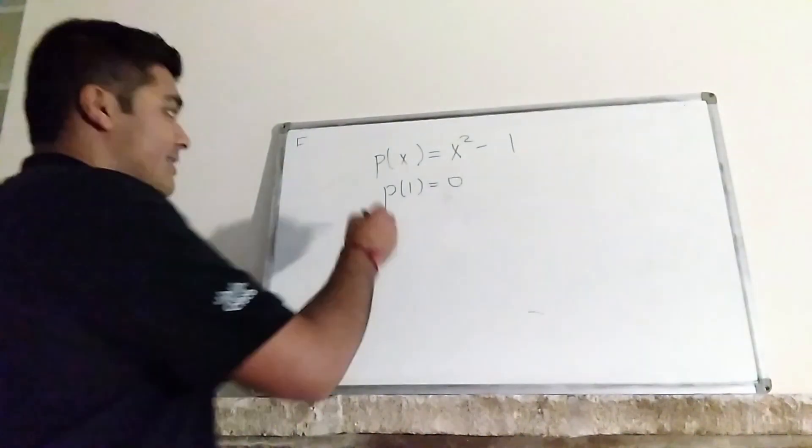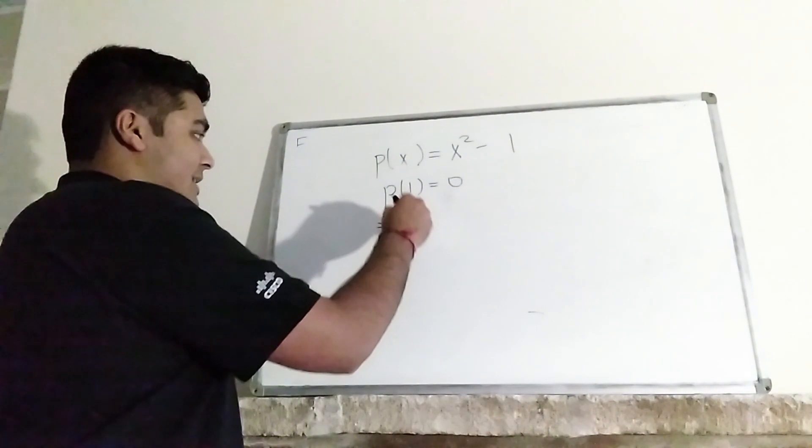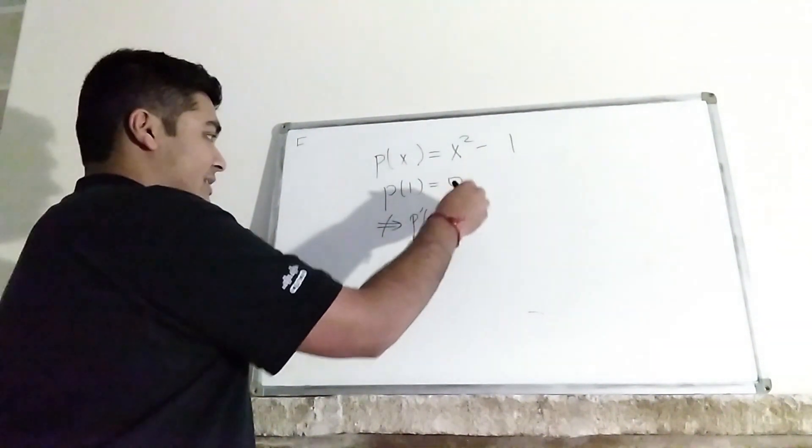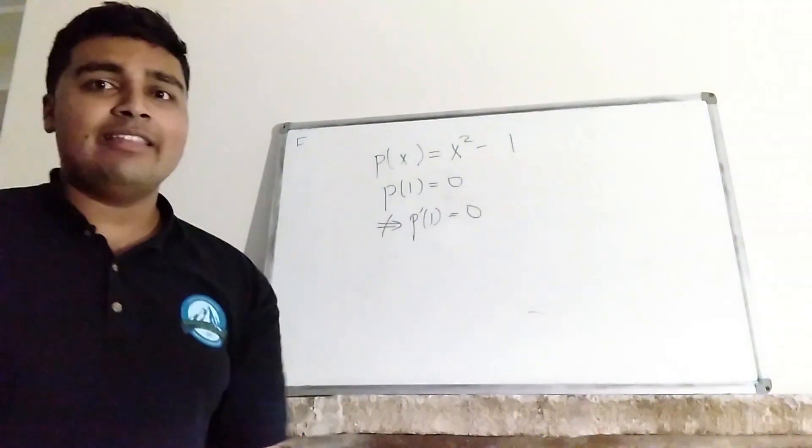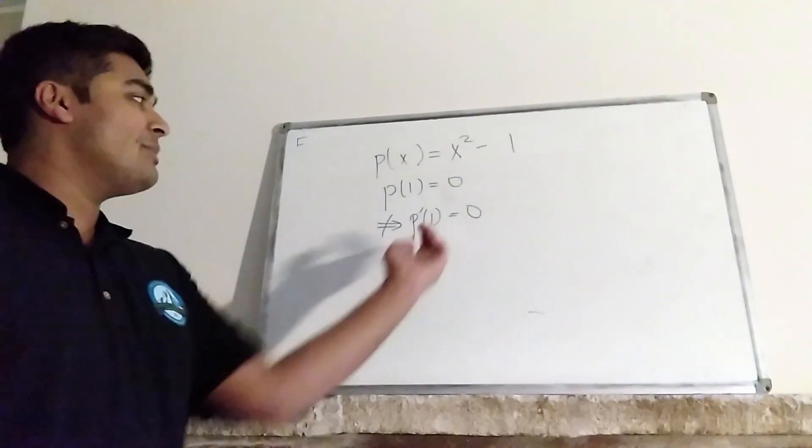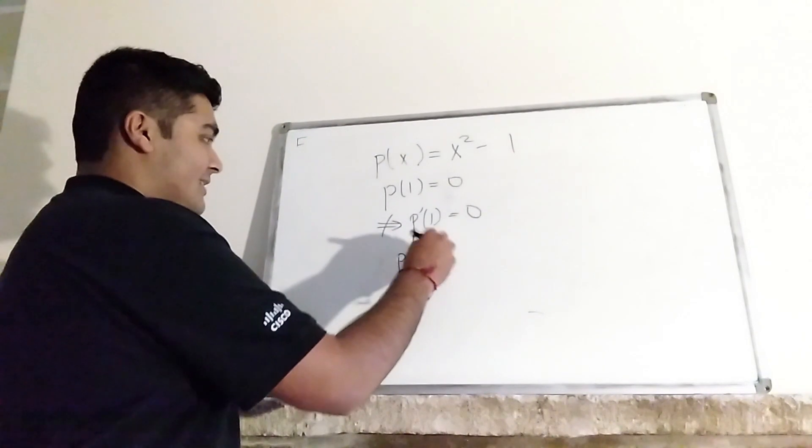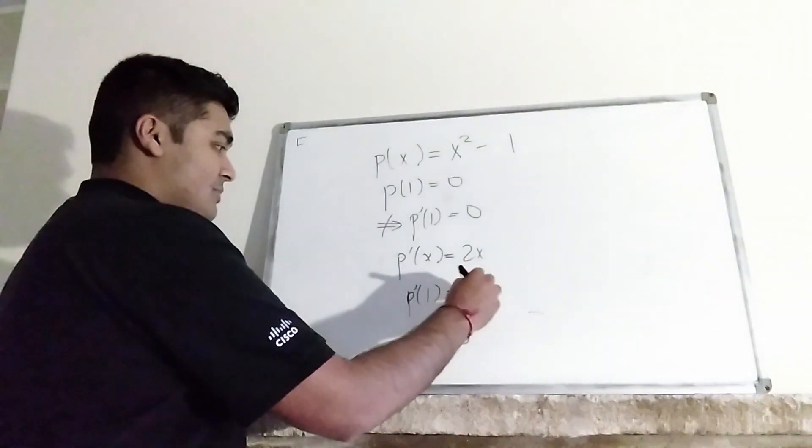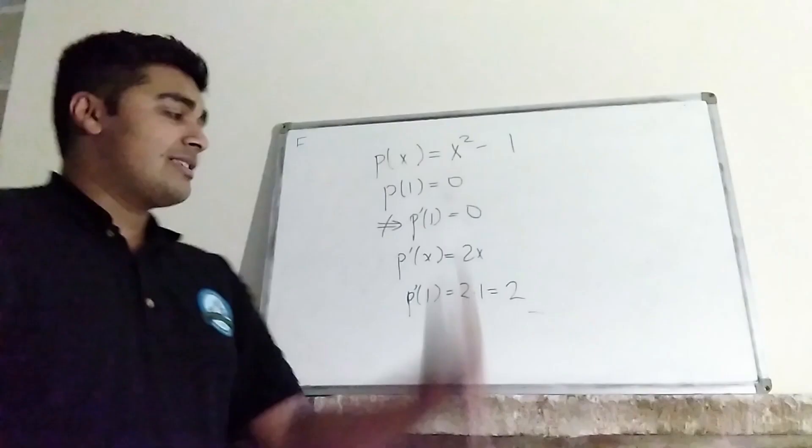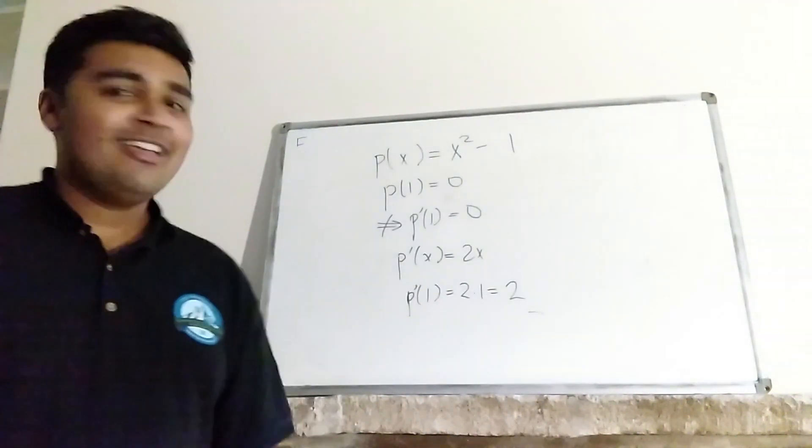And that's exactly the thing I assumed held in my proof of Fermat's last theorem. And we can quite clearly see that because p'(x) is just 2x and therefore p'(1) is 2 times 1, which is 2. And of course, that is not 0.